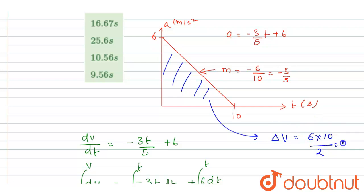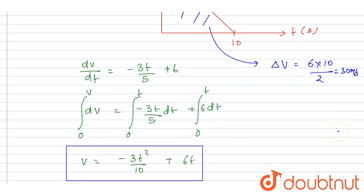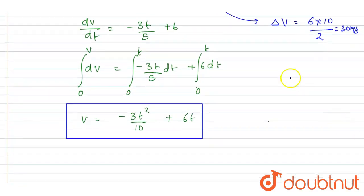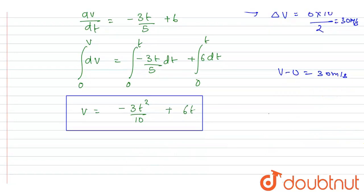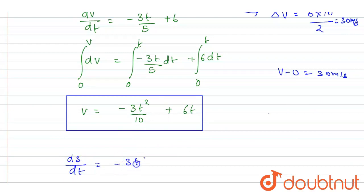So after 10 seconds the car will move with a constant speed of 30 meters per second. The change in velocity is 30, so it will continue moving at 30 meters per second after 10 seconds. Now let's calculate the distance moved in the first 10 seconds by integrating: ds/dt equals 6t minus 3t squared by 10.